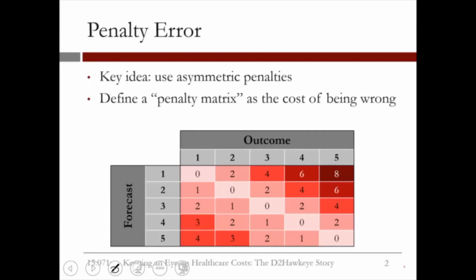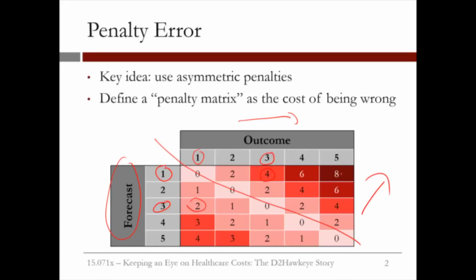The graph here shows a matrix where this is the outcome and this is the forecast. For example, whenever we classify a low risk patient as a high risk patient, we pay a penalty of 2, which is the difference of 3 minus 1. But reversely, when you classify a bucket 3 patient as a bucket 1 patient, the penalty is double the amount. So the off-diagonal penalties are double the corresponding penalties in the lower diagonal.